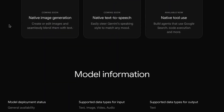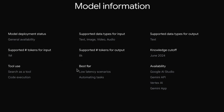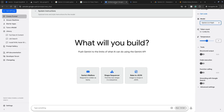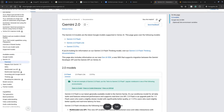Scrolling down, we can see more information. It supports multimodal inputs like text, image, video, and audio. It supports text outputs, 1 million tokens for input, and 8,000 tokens for output. Gemini 2.0 Flash is best for low latency scenarios, quick responses, and automating tasks. It's available via Google AI Studio, the Gemini API, the Google web app, and in Vertex AI.